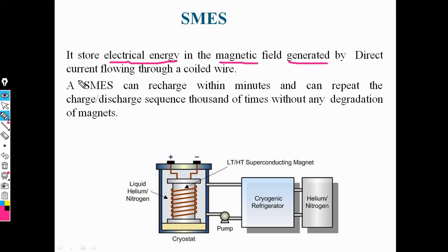This type of energy storage system is advanced compared to a battery. Various liquids are used, including helium, nitrogen, and argon. When DC current is applied to the superconducting magnetic coil, current flows through the coil, a magnetic field is produced, and this magnetic field produces magnetic flux. The flux links to each other, and finally a small amount of current flows, resulting in electrical energy useful for storage in a smart grid.